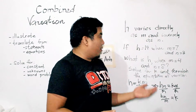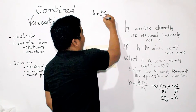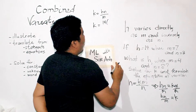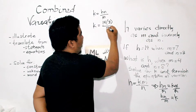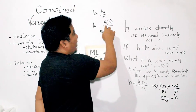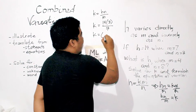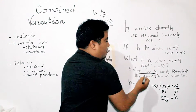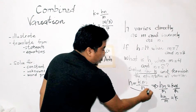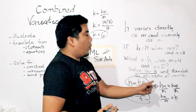Now we apply our given variables to solve for K. Using K = HN over M, we can divide 14 by 7, which gives 2, and then multiply by 3 to get 6. So K is equal to 6. The equation of variation is found by substituting K into the original statement: H = 6M over N. This is your equation of variation.